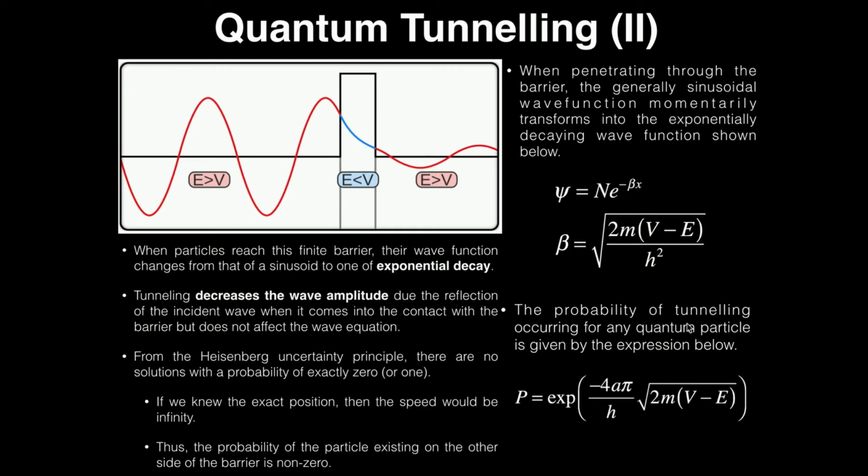Now, if you want to actually calculate the probability of tunneling for any particle, you actually just use this expression. So the probability of something tunneling is actually the exponent of negative 4 times a π over h. h is Planck's constant. a is the width of the barrier. And it's times the square root of 2m, where m is the mass of the particle, say an electron.